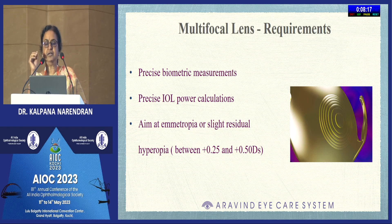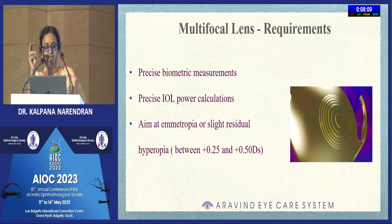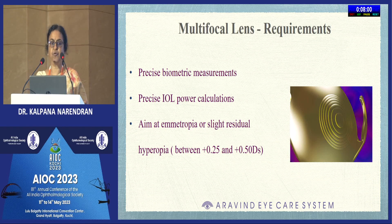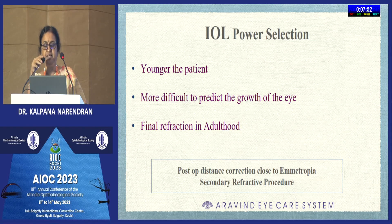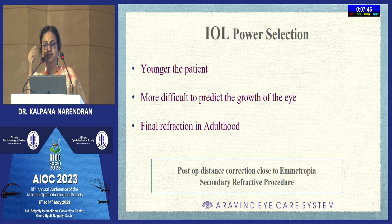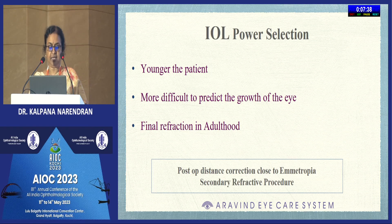For multifocal lenses in children, older children will be the ideal candidates. You need precise biometric measurements and precise IOL power calculations, and always aim at emmetropia or slight residual hyperopia ranging from 0.25 to 0.5 diopters. IOL power selection is more difficult the younger the patient - the ideal age group is usually around 10 or 11 years. If biometry shows myopic tendency, defer the multifocal lens because there might be a gross myopic shift. Always calculate for the refraction expected in adulthood.